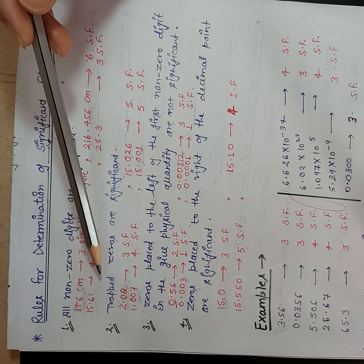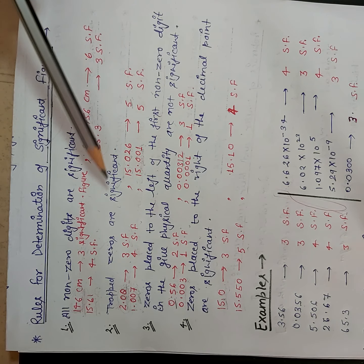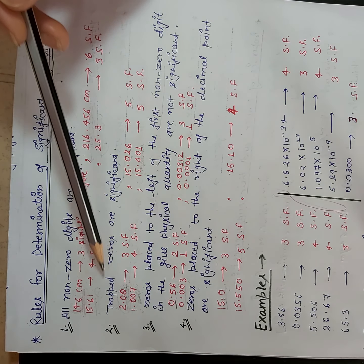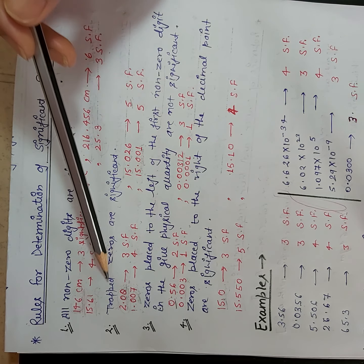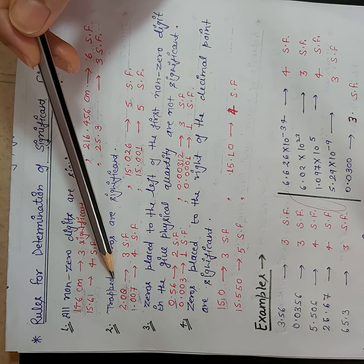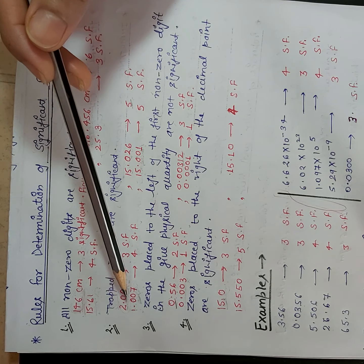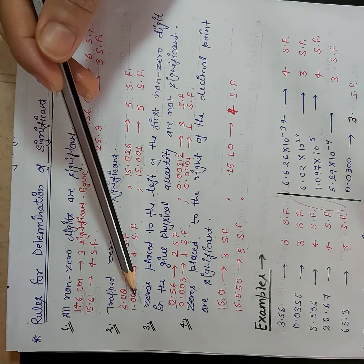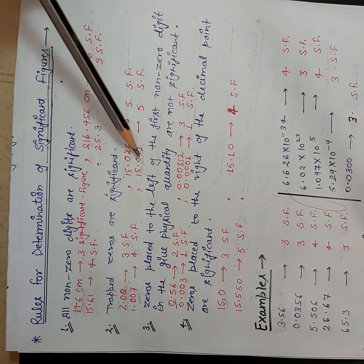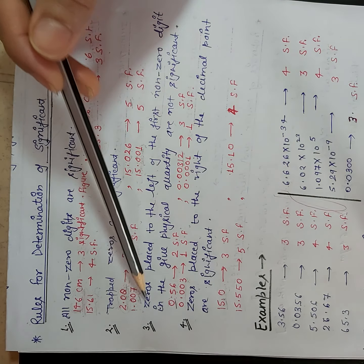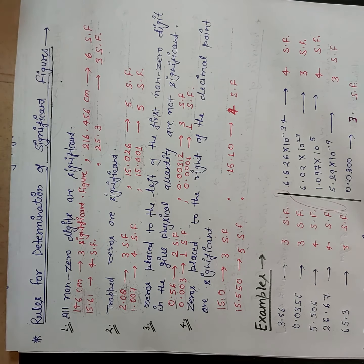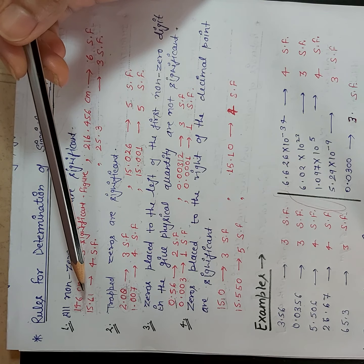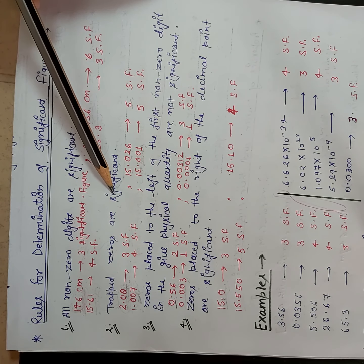Our second rule is: trapped zeros are always significant. What is meant by trapped zeros? Trapped zeros means zeros present between two non-zero digits. So whenever you see trapped zeros, you will consider those zeros as a significant figure.